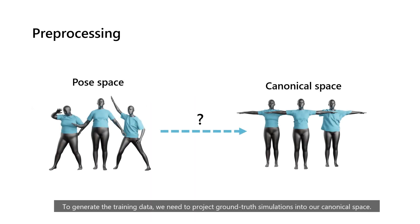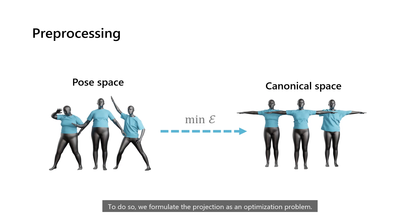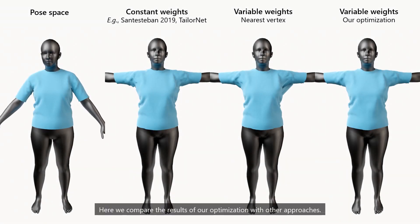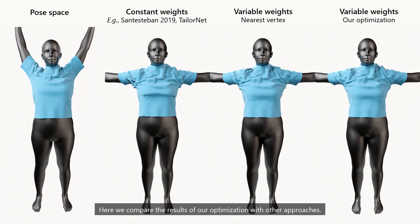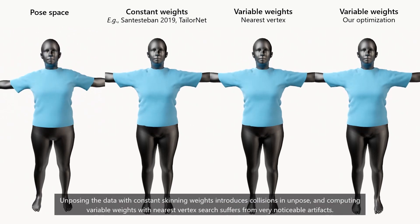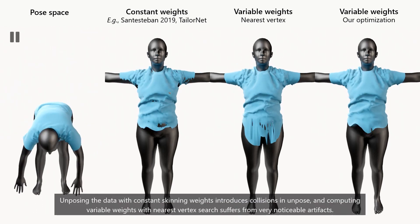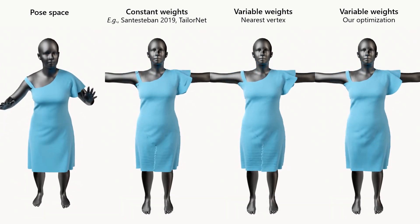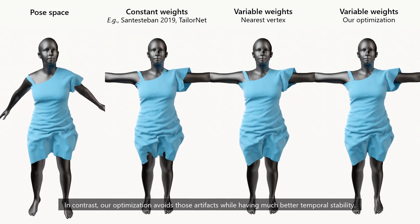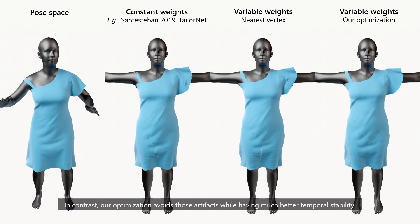To generate the training data, we need to project run-time simulations into our canonical space. To do so, we formulate the projection as an optimization problem. Here we compare the results of our optimization with other approaches. Unposing the data with constant skinning weights introduces collisions in unpose, and computing variable weights with nearest vertex search suffers from very noticeable artifacts. In contrast, our optimization avoids those artifacts while having much better temporal stability.